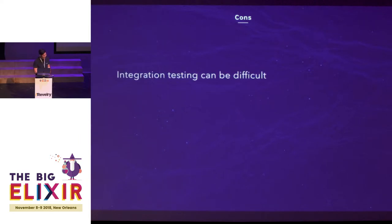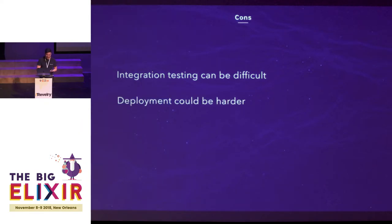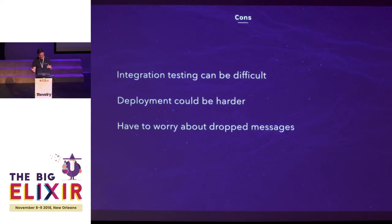With pros, there always come cons — our job is just picking trade-offs. Integration testing is really difficult. If you want to test that creating a user sends an email through the event bus, you have to ensure it's up. Deployment's harder — you might have to manage multiple VMs. You also have to worry about dropped messages, and making sure they're all in order.